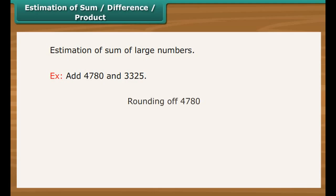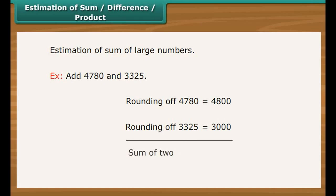Estimation of sum, difference, product. Estimation to the nearest number can help in the estimation of the sum of two large numbers. For example, add 4,780 and 3,325. Rounding of 4,780 would make it 4,800. Rounding of 3,325 would make it 3,000. Sum of the two, 7,800.